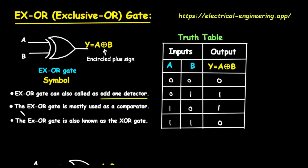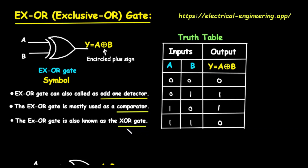We'll see exactly why when we look at the truth table in a moment. Second, the EXOR gate is frequently used as a comparator — specifically, it acts as an inequality detector. It can compare two bits and tell us if they are different. If the inputs are not the same, the output is high; if they are the same, the output is low. As a point of clarification, EXOR and XOR mean the exact same thing.